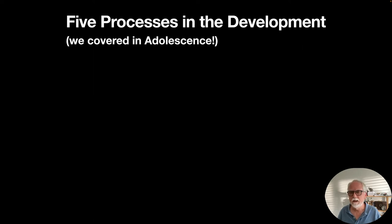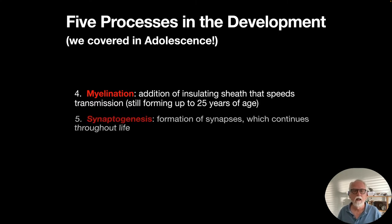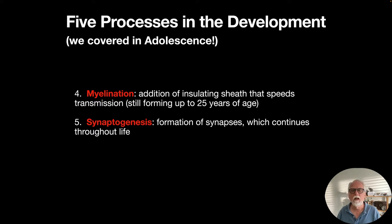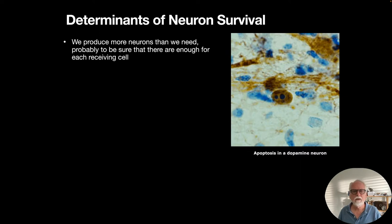The fourth process is myelination — the addition of an insulating sheath that speeds up transmission. This happens all the way up to age 25, though it occurs at a great rate during adolescence and also quickly in the first year or two of life. The fifth process is synaptogenesis — the formation of synapses, the connections between axon terminals and dendrites. This continues throughout life and is not something that ends at any particular age.